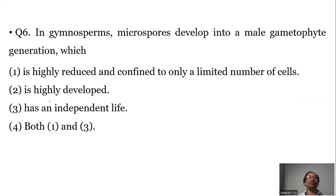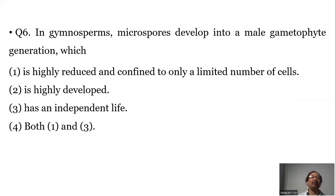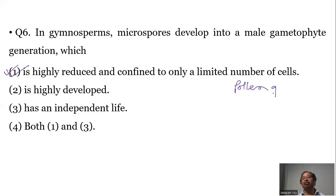Question number six: In gymnosperms, microspores develop into a male gametophyte generation which is highly reduced and confined to only a limited number of cells. This is true, and this highly reduced male gametophyte is known as the pollen grain, also called microspores.